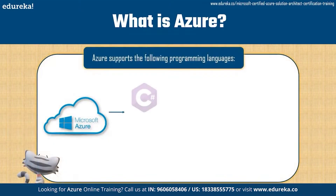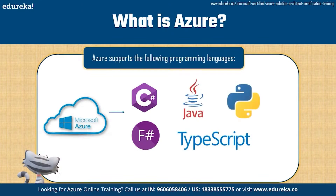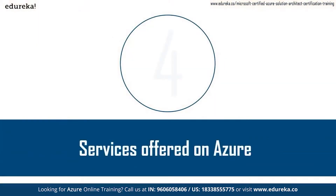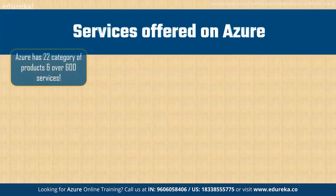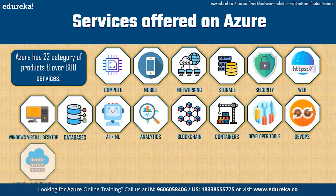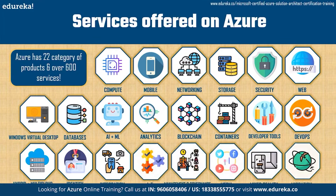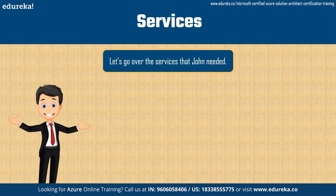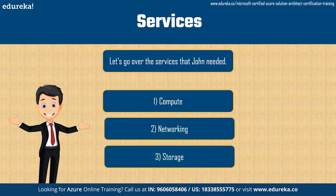The languages supported on Microsoft Azure are C#, F#, Java, TypeScript, and Python. Now, Azure has 22 categories of products and over 600 services, so we won't be able to discuss all 600. As homework, go to Azure's website and check out each category. John needed three services: compute, networking, and storage. Let's take a look at each of those in a bit of detail.